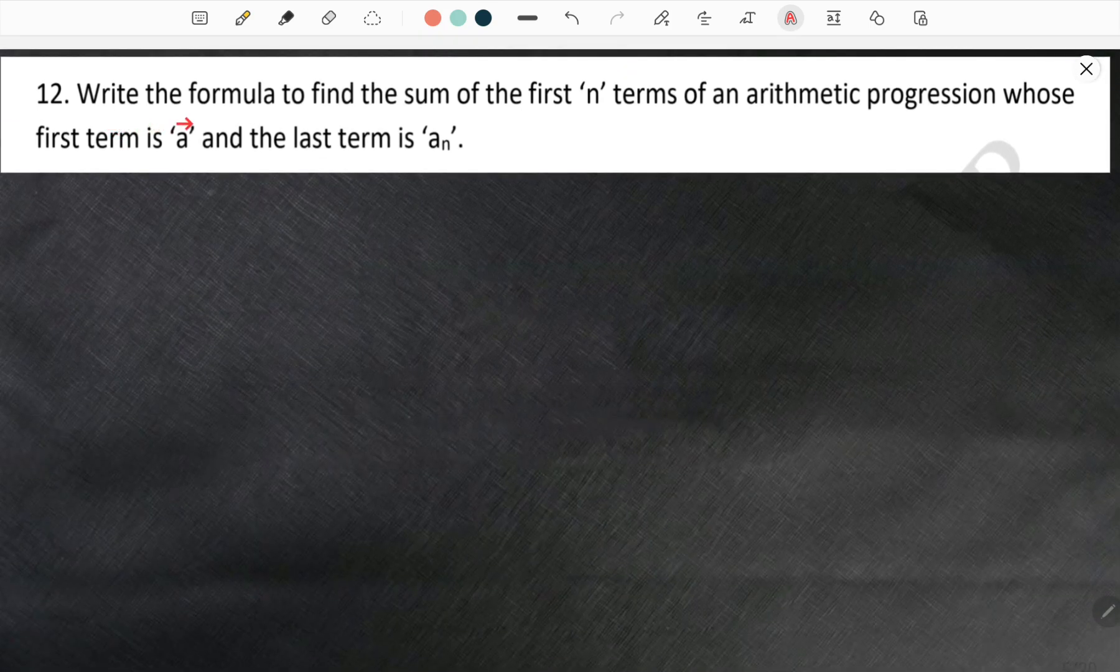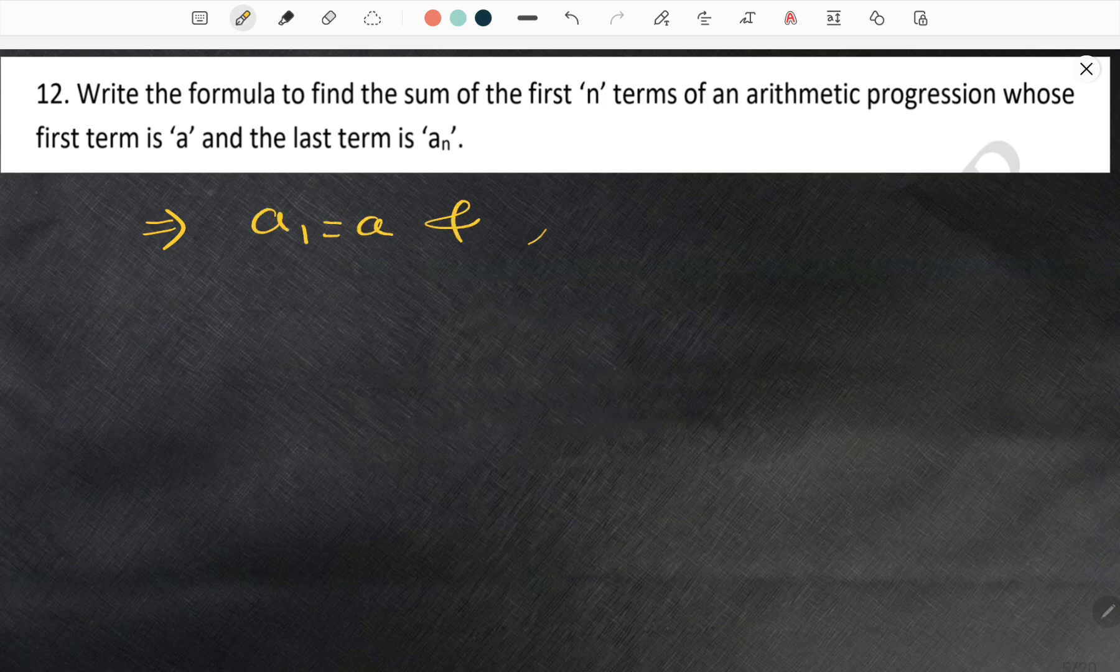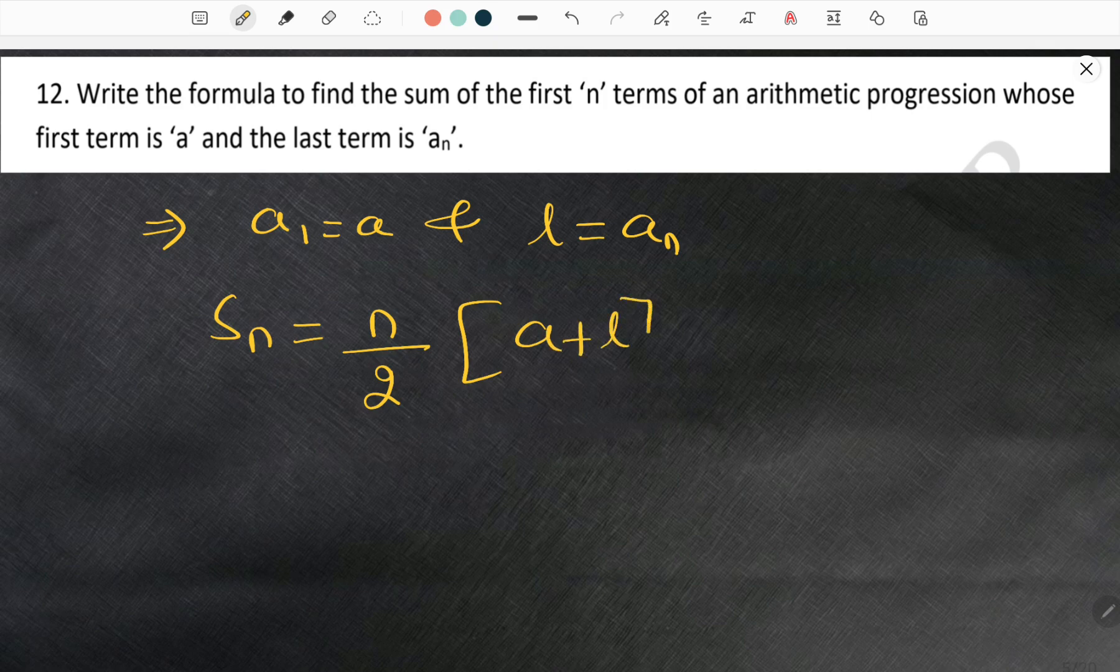Moving forward to the twelfth question. Write the formula to find the sum of first n terms of an arithmetic progression whose first term is A and last term is AN. So first term A1 is equal to A and last term is equal to AN. The sum of N terms is N by 2 bracket A plus L.